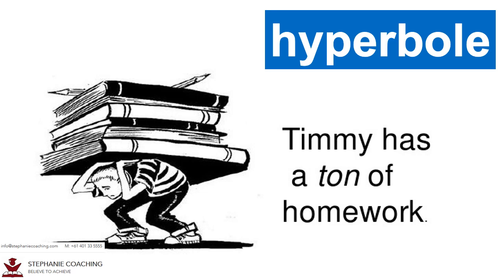Word number twelve is hyperbole. A hyperbole is an exaggeration which cannot be taken literally. For example, 'my mum is going to kill me if I don't clean my room' — here the exaggeration is used on the action of the mum. She will not literally kill me; it means I will get into big trouble for not cleaning my room. This language is called hyperbole. Do not pronounce this word as 'hyperbole' (with a silent e).